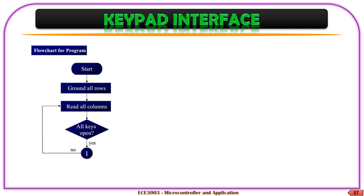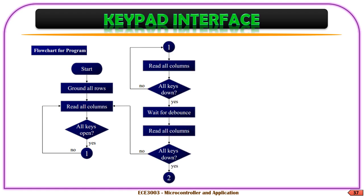The algorithm for this program is: once we start the program, the first thing is that we need to ground all the rows to make all the input rows as input rows, and then we read through all the columns to find whether any key-pressing event has happened during that particular process. If so, we move on to the next execution scenario; otherwise, we read all the columns again for any key-pressing event.